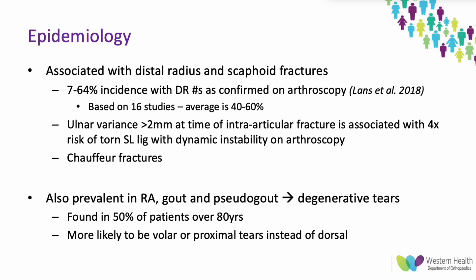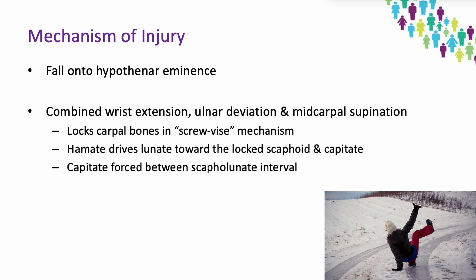Degenerative tears are more likely to be volar or proximal rather than dorsal, due to the thinner ligaments on that side. The mechanism of injury is commonly a fall onto the hypothenar eminence with the wrist in extension, ulnar deviation, and mid-carpal supination. This locks the carpal bones and the hamate is driven towards the lunate through the locked scaphoid and capitate, forcing the capitate between the scapholunate interval and tearing the ligament.